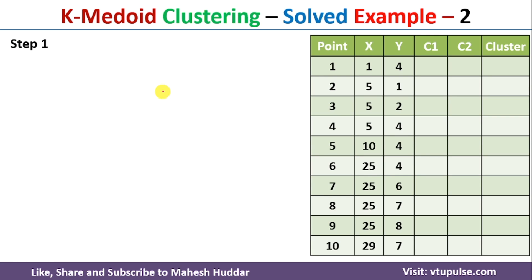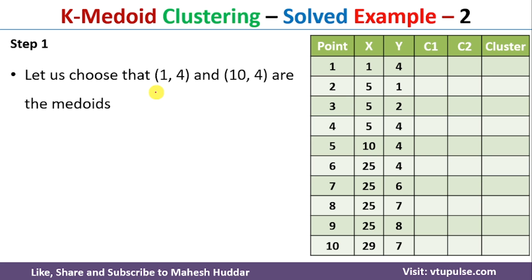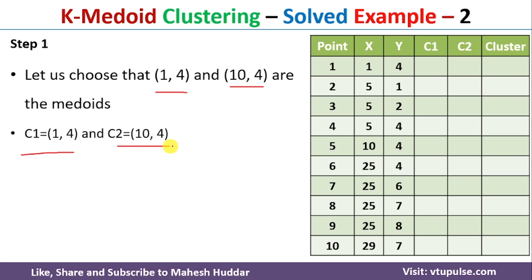In the K-medoid clustering algorithm, from the given data points, we need to select two data points randomly because we want to form two clusters. We initialize them as the initial medoids. In this case, I have selected (1,4) and (10,4) as the two medoids — C1 = (1,4) and C2 = (10,4).